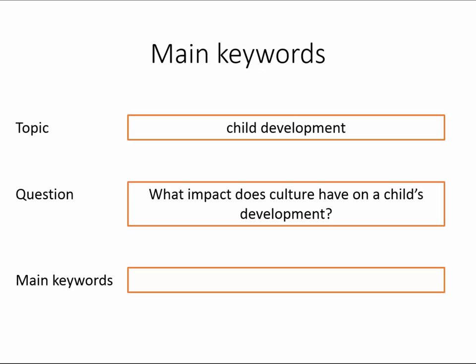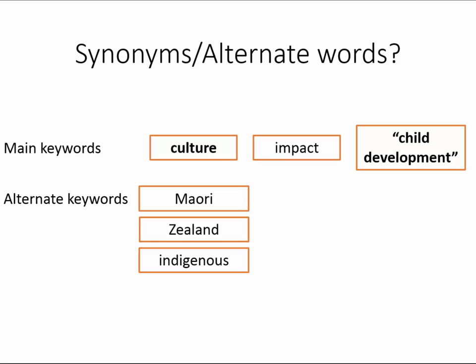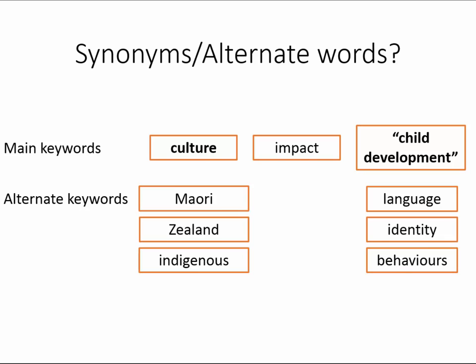There are three main keywords in that question: culture, impact, and child development. Once you have the main keywords, establish which ones may have alternate keywords. Think of different synonyms or more specific terms.